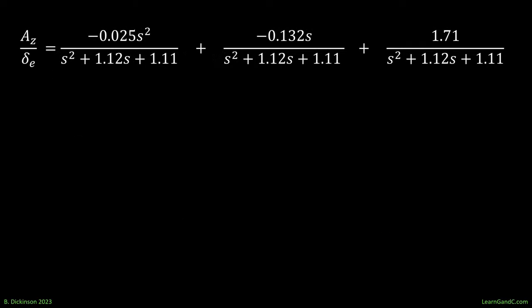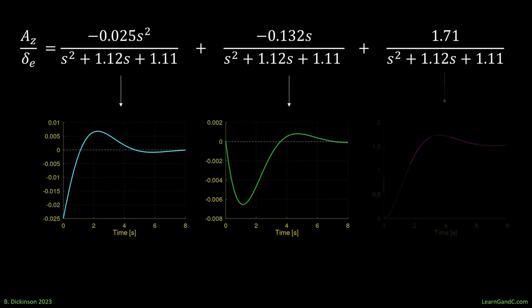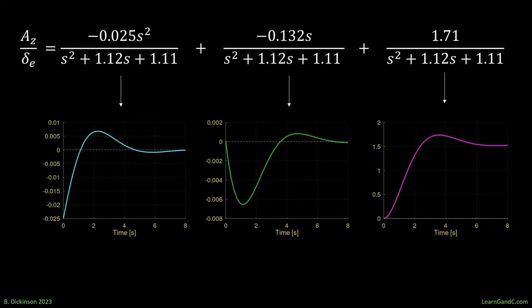Now, compare the step-response for each term in the transfer function. The third term dominates. The first and second terms reveal zero contributions. They tend to bring the second-order response down initially before it comes to equilibrium at about 1.5. The downward transient is due to their negative coefficient. And their coefficients indicate a right-half plane zero. Note the coefficients of the first and second terms are also 1 to 2 orders of magnitude smaller than the third term.